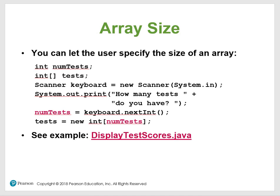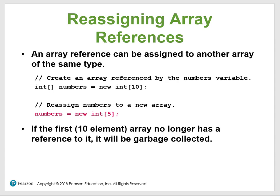Here you have the reference, the array size. Remember, in Java all arrays are basically reference parameters. So reassigning array references — this means you can write to an array, put it back, read from an array. Remember in Java and C++, we had that ampersand next to the data type. An array reference can be assigned by another array of the same type.